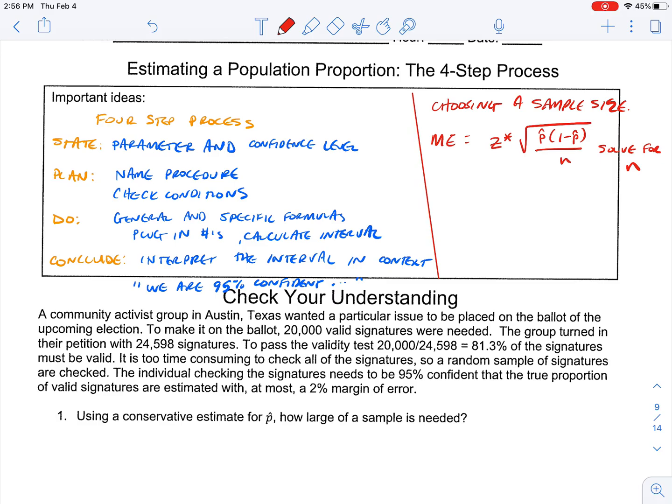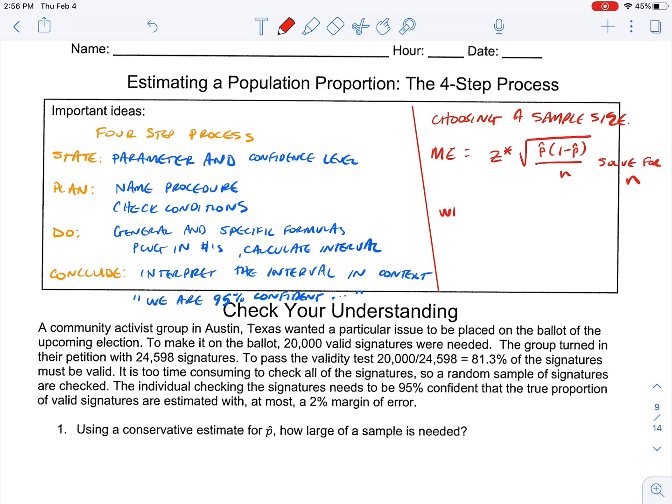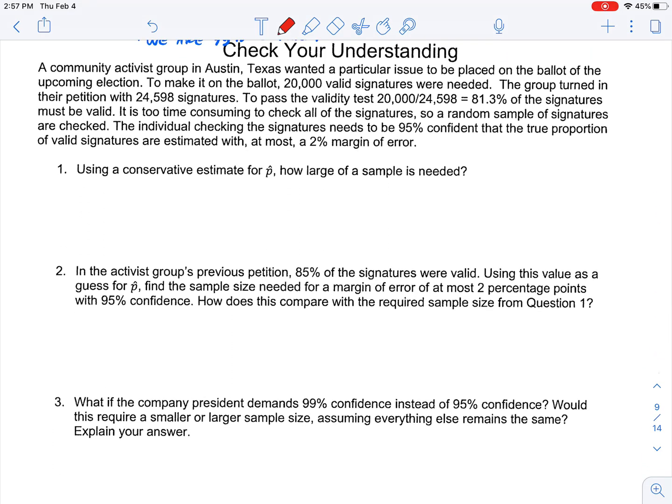That means in our problem that we'd be doing, we would know everything in this question. We'd know the margin of error. We'd know the confidence level. We'd know the z star, and we'd know the proportion, but we wouldn't know the sample size. And so when p hat is unknown, we want to use p hat equal to 0.5 because that's a 50-50 shot, right? And if n comes out as a decimal, we want to round up because we don't want to have a sample size that's too small.